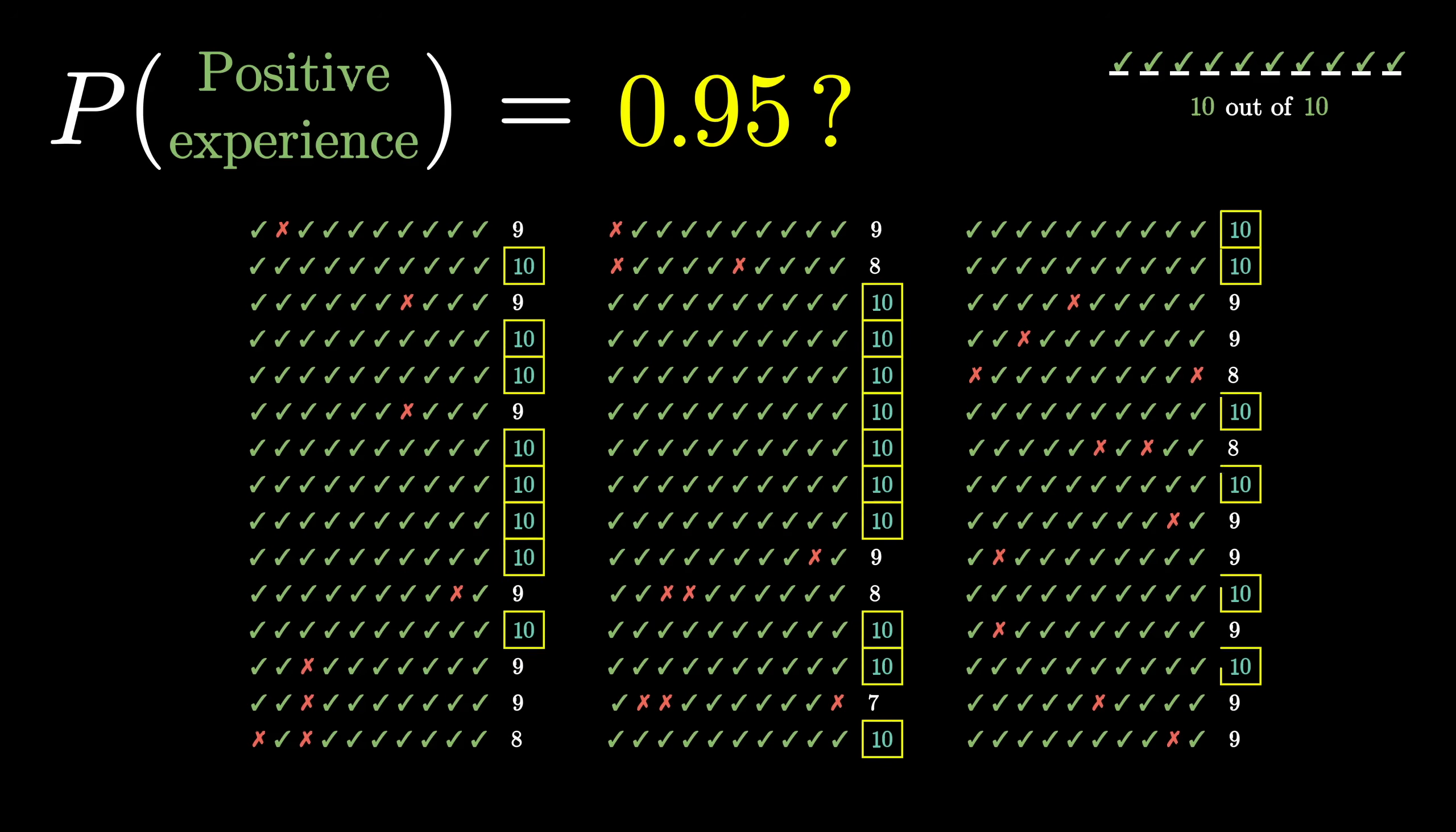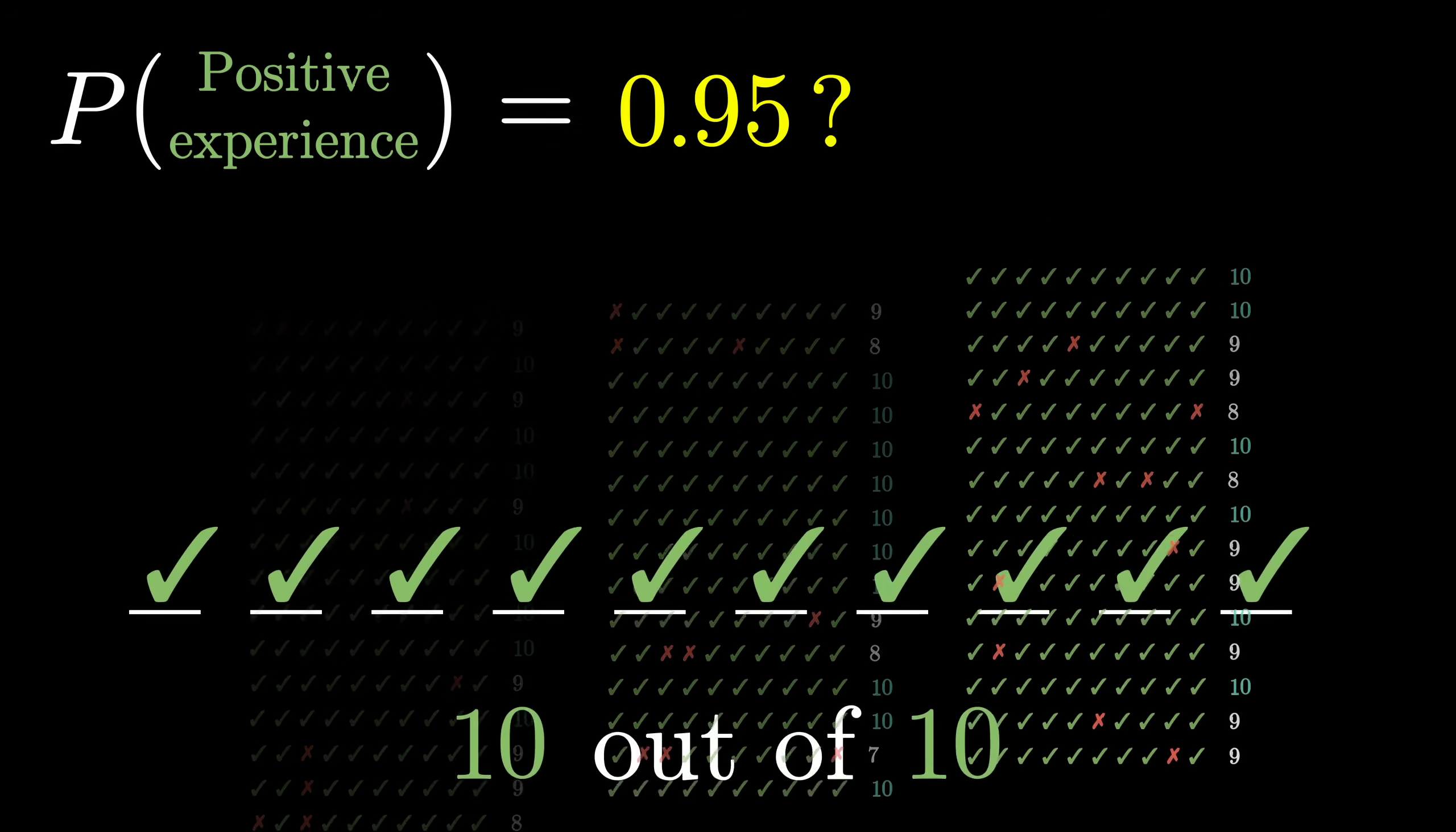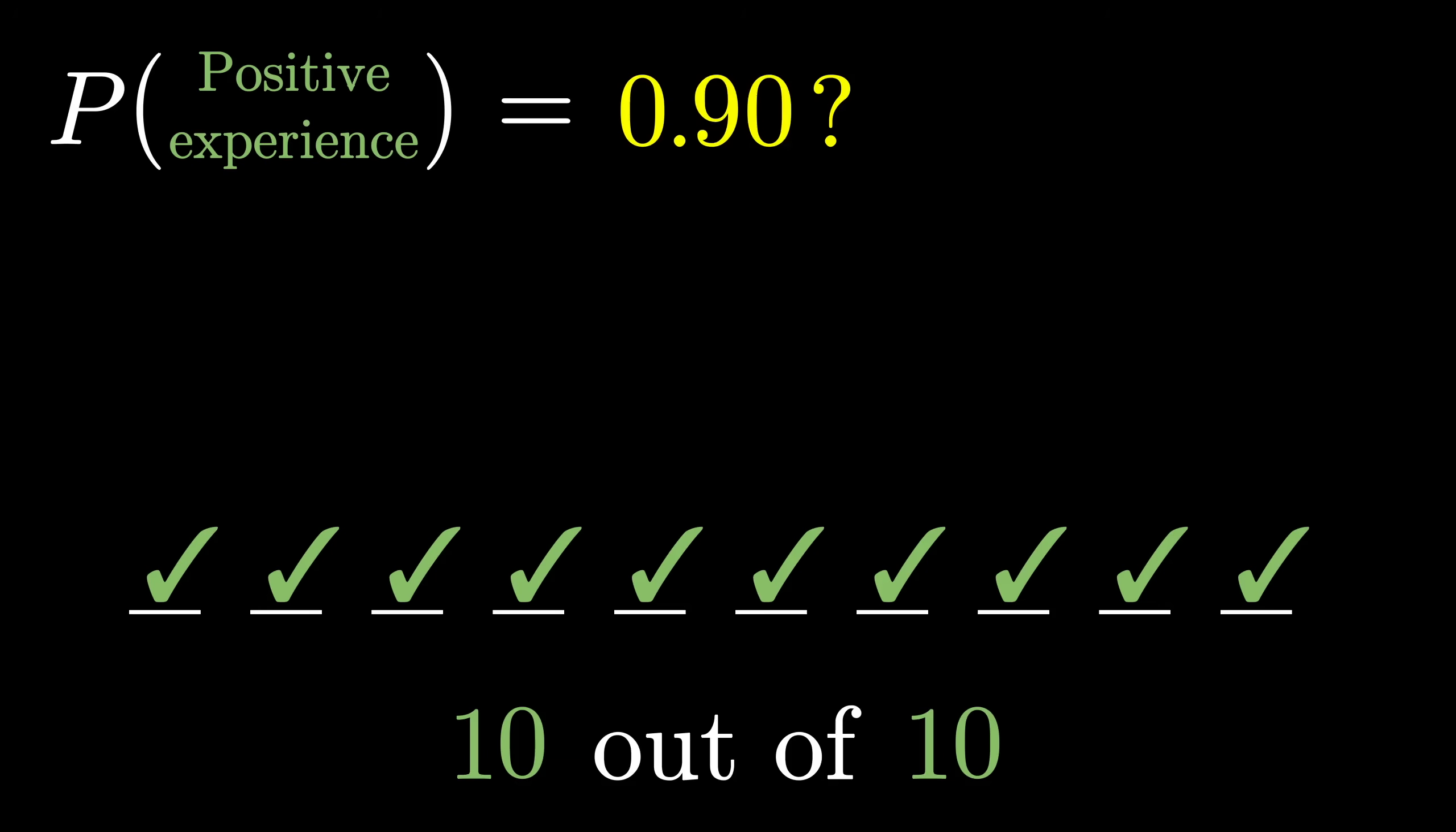Quite a few of those, around 60% actually, give 10 out of 10. So the data we see seems perfectly plausible if the seller's true success rate was 95%. Or maybe it's really 90%, or 99%. The whole challenge is that we just don't know.